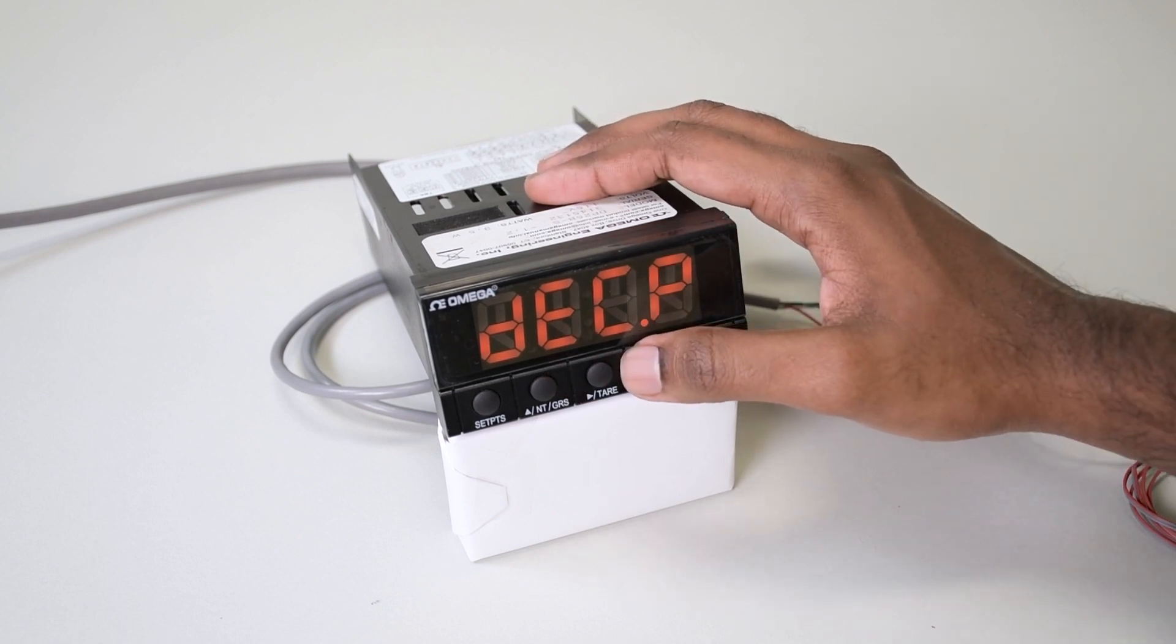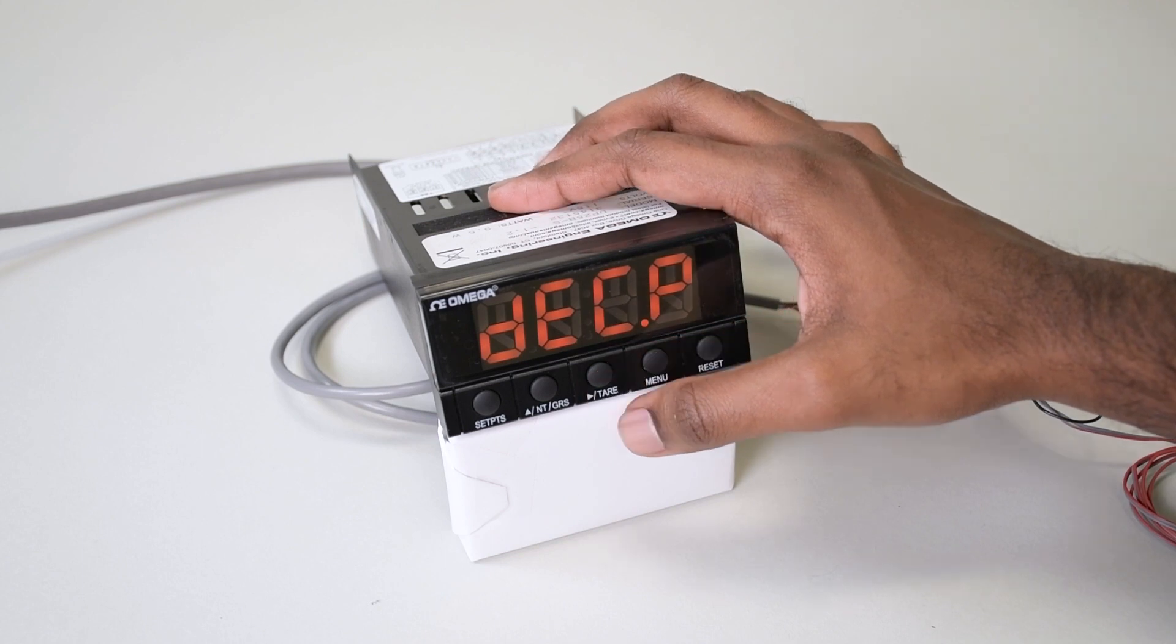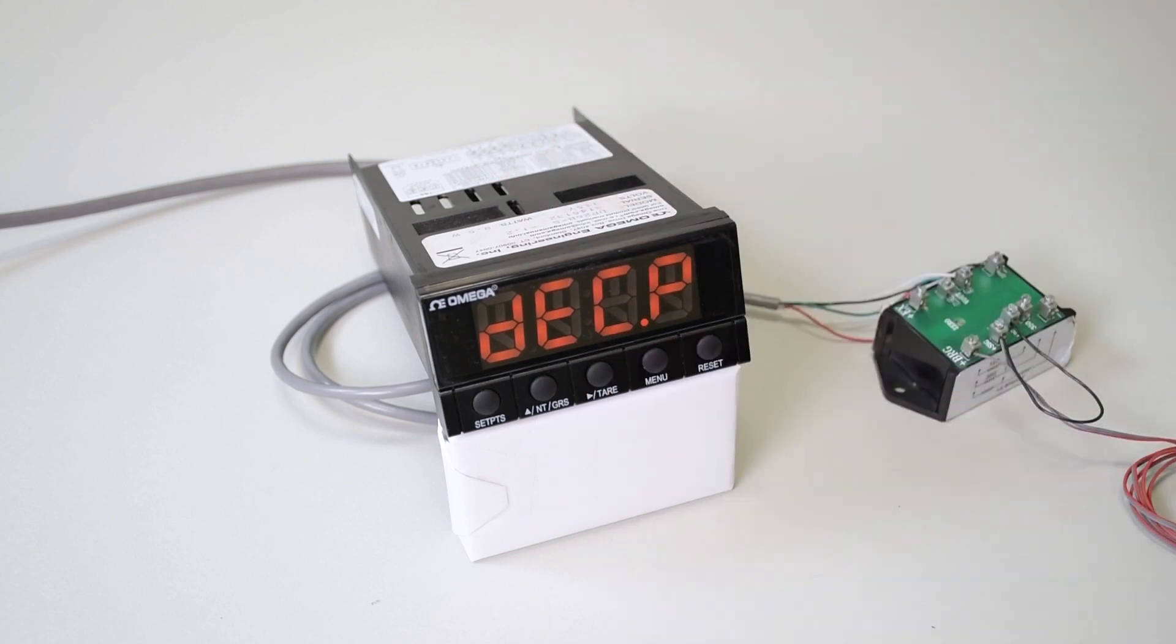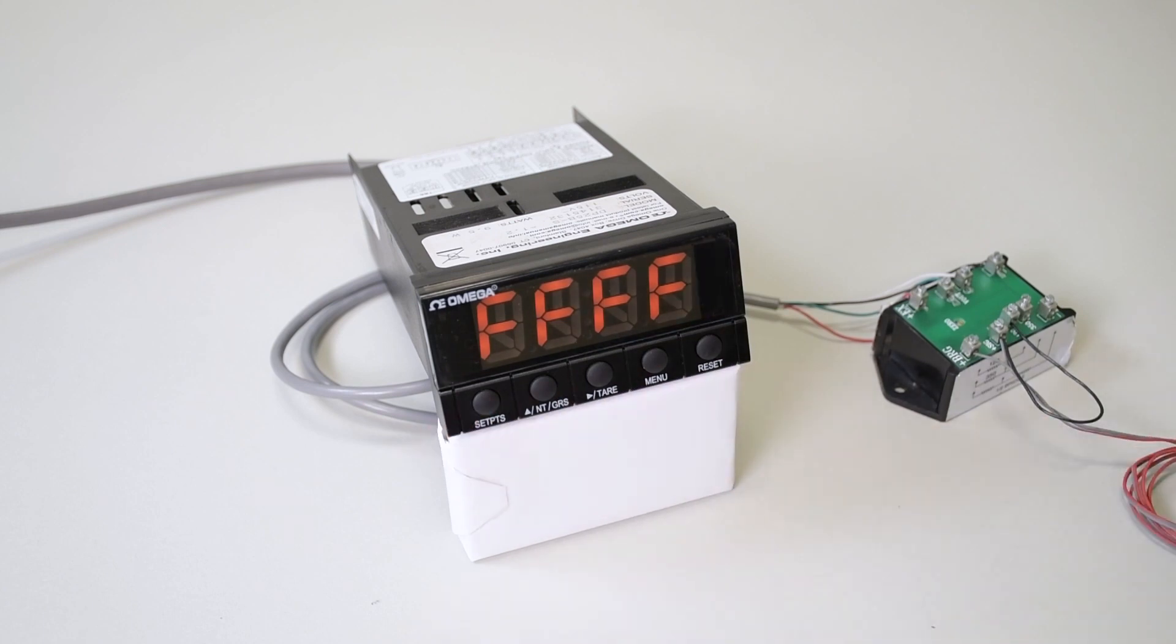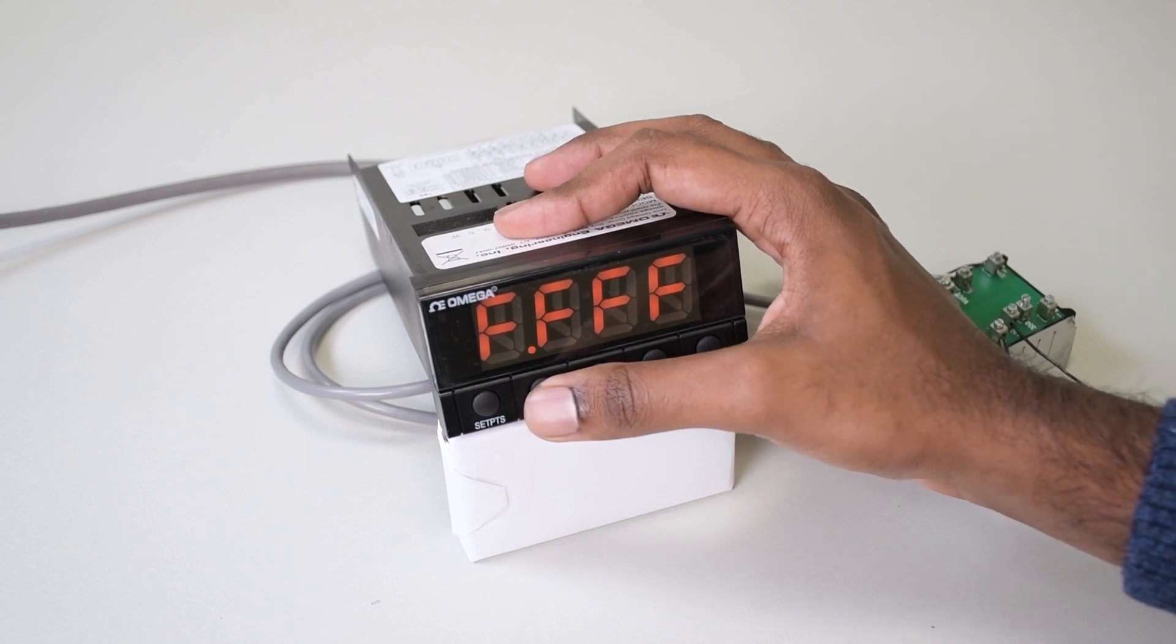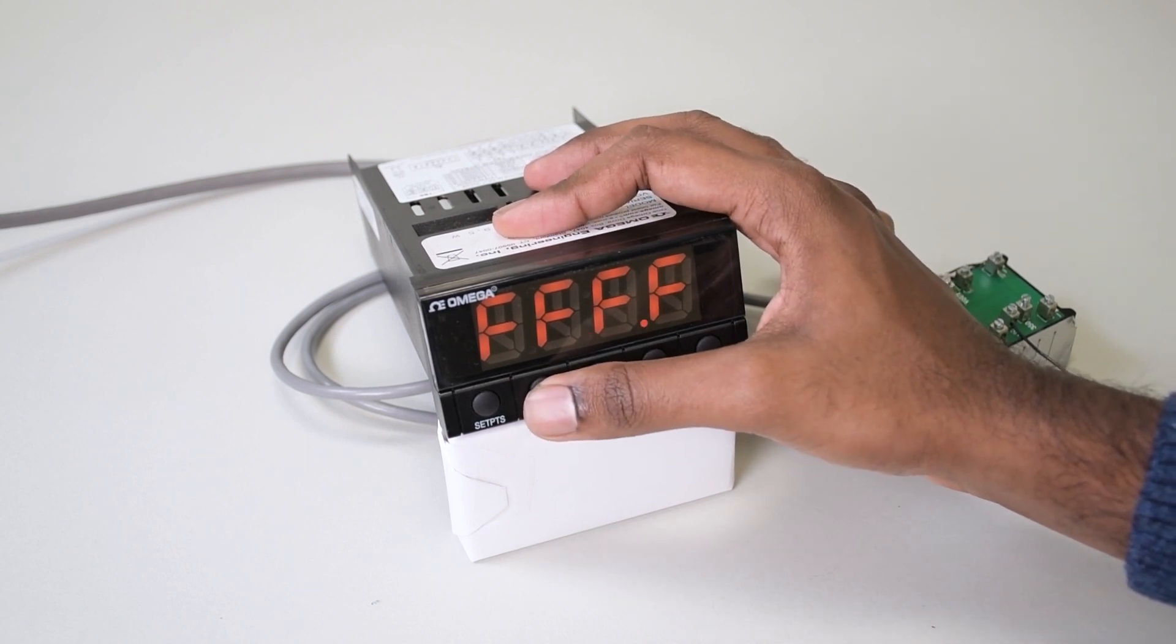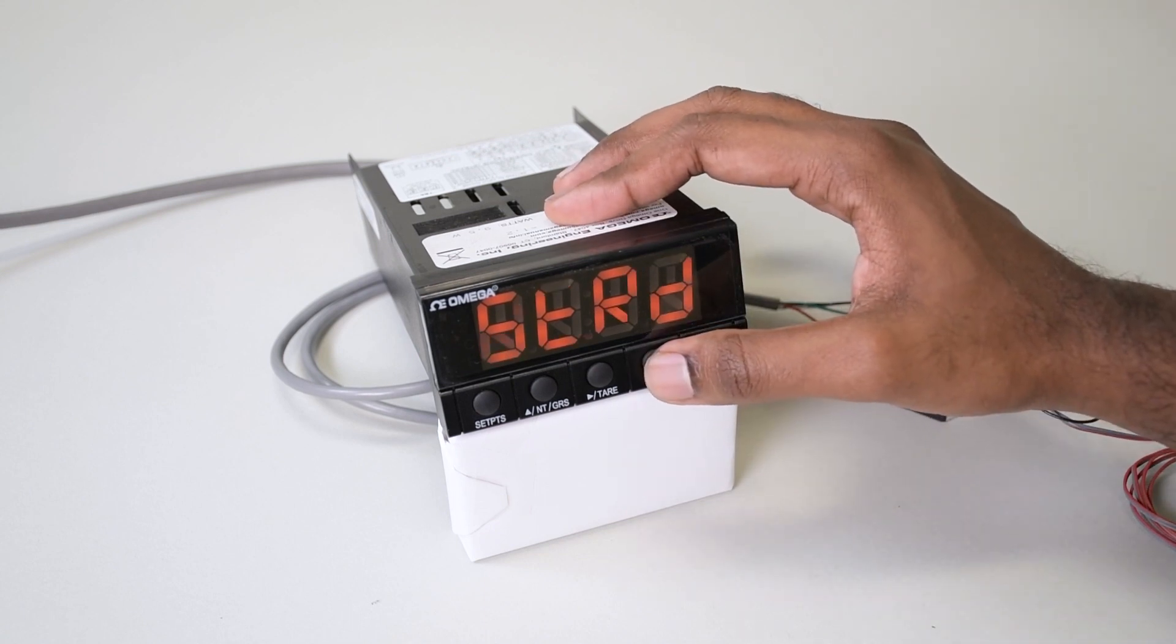You'll see DEC.P. For this example, because we want to read 1,000 microstrain, I'm going to be using FFFF. Hit the tare button once. You see the number of digits there. I'm not having any decimal place. If you have any decimal place, hit the NTGRS button once. You can scroll through. I'm not having any decimal place right now. Press menu button once to save it.